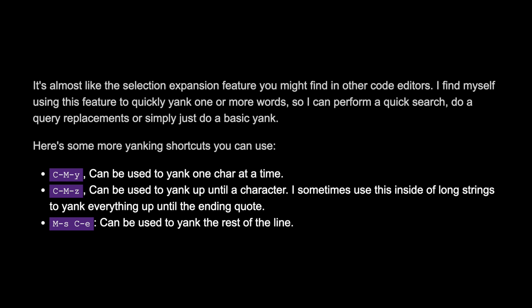Here are some more yanking shortcuts you can use. Ctrl-Meta-Y can be used to yank one character at a time. Ctrl-Meta-Z can be used to yank up until a specific character — I sometimes use this inside long strings to yank everything up until the ending quote. Meta-S Ctrl-E can be used to yank the rest of the line.